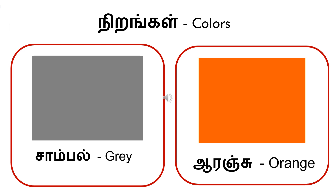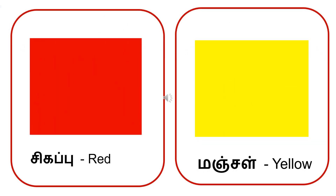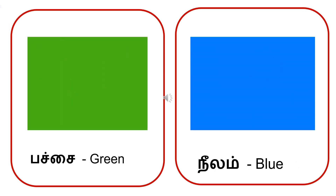Ni-ra-ing-ka-il. Nirangal is colors. Sa-im-pa-il. Saambal is grey. A-ra-ing-cu. Aranju is orange. Si-ha-ip-pu. Sihapu is red. Ma-i-in. Cha-iil. Manjil is yellow. Pa-i-chai. Pacchai is green. Ni-la-i-yam. Neelam is blue.